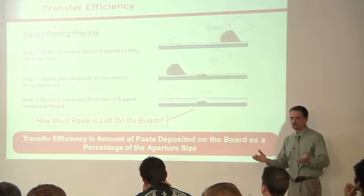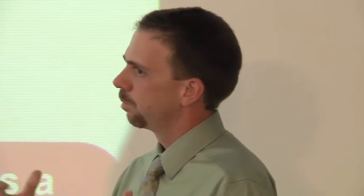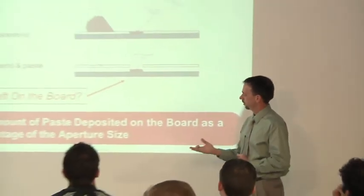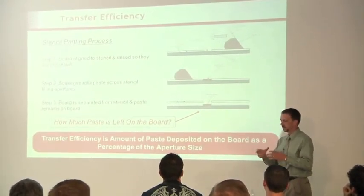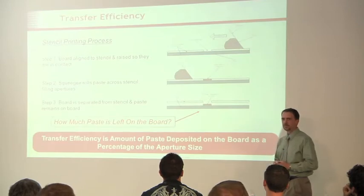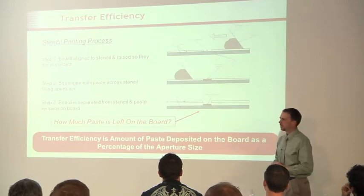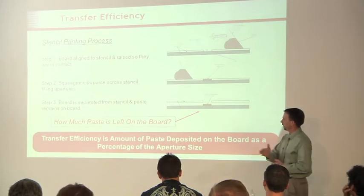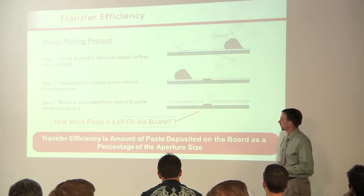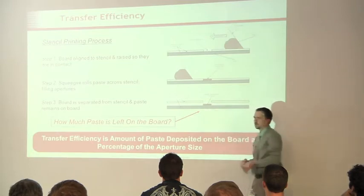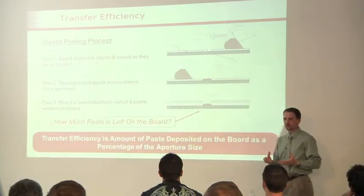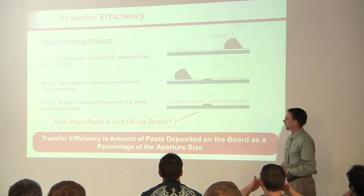This has already kind of been discussed. I'm sure most of you are familiar with this. Brian just did kind of an overview of this as well, but just a real broad overview of the print process. A board is brought into the printing machine. It's aligned to the stencil. It's brought up in contact with the bottom of the stencil so that all those apertures that you've got cut into the stencil are now aligned over those pads that you want to deposit paste on. At that point, the squeegee rolls paste across the stencil, filling all those apertures. The board is separated from the stencil. And hopefully you get a situation like this where all that paste that you just rolled into those apertures sticks to the board, comes away from the stencil, and you've got a nice brick of paste there.